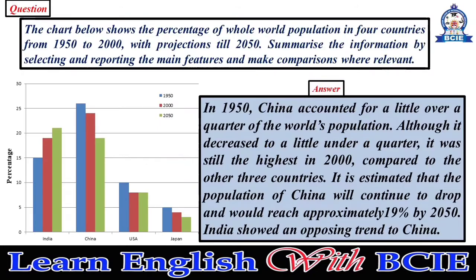In 1950, China accounted for a little over a quarter of the world's population. Although it decreased to a little under a quarter, it was still the highest in 2000 compared to the other three countries. It is estimated that the population of China will continue to drop and would reach approximately 19 percent by 2050.